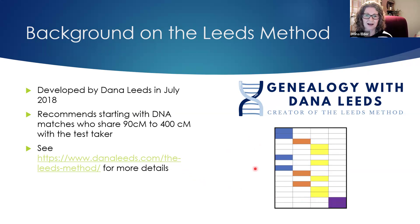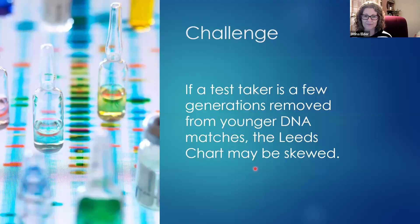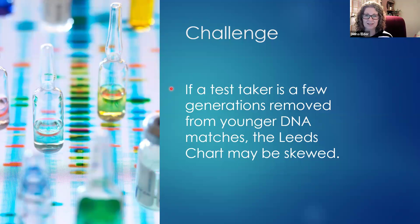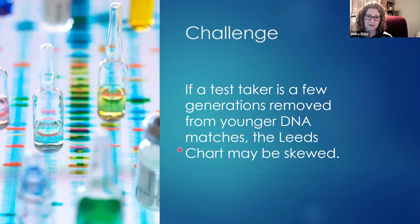One challenge I've noticed is when the test taker is a few generations removed from younger DNA matches — it may skew your Leeds chart. We always want a test taker who is closest generationally to our ancestral couple: a parent, grandparent, aunt, or uncle. But as more people take DNA tests at younger ages, we're getting greater generational separation, which can mess up the Leeds chart.